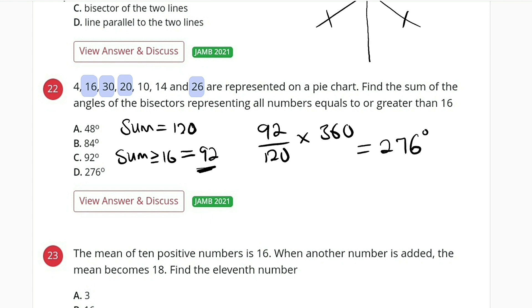276 degrees. So if you find the angle representing these numbers on a pie chart and you add all of them together, you have to get 276, which is option D.